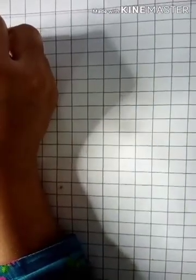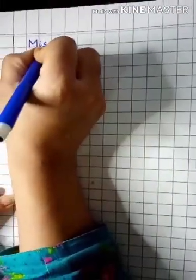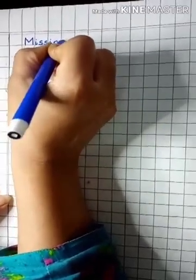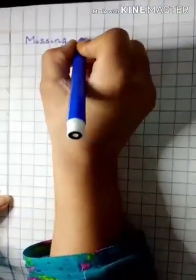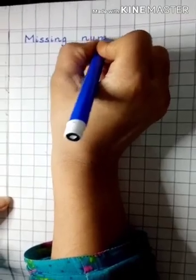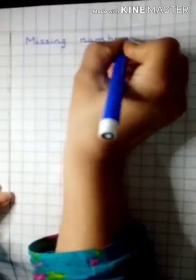I'm going to write some missing numbers for your homework. You have to do this work on your neat copies. First, write down the headline: missing numbers.